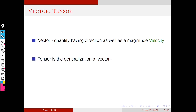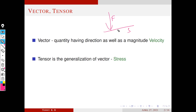Tensors are the generalization of vectors, because a tensor may contain more than one direction. For example, consider stress. Suppose there is a force and a surface — the stress of this force on the surface depends on the direction of the force and also the direction of the surface. So to define stress, we have three quantities: magnitude of the force, direction of the force, and direction of the surface. Therefore, stress is a tensor quantity.